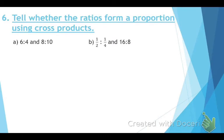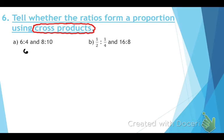Number six says to tell whether or not the ratios form a proportion using cross products. Draw a red fluffy cloud around the words 'cross products' — sometimes instructions will specify which method to use. Always read the instructions carefully on your quiz and test.